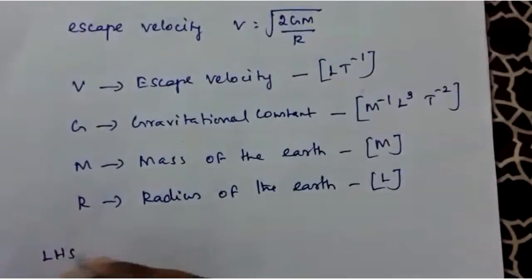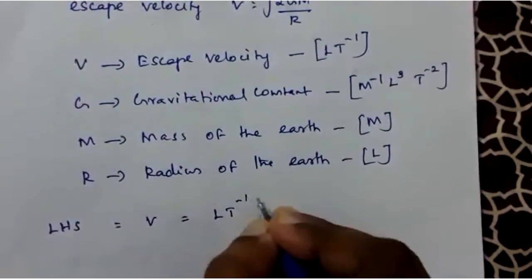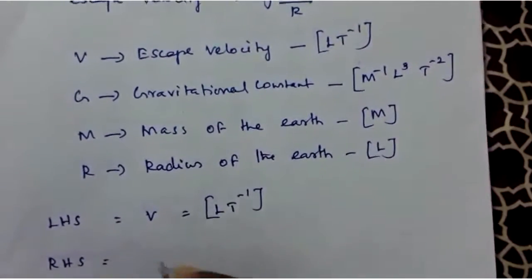Now I will take the left-hand side of the equation. That is nothing but the escape velocity. Escape velocity has the dimension [LT^-1]. Taking the right-hand side of the equation,